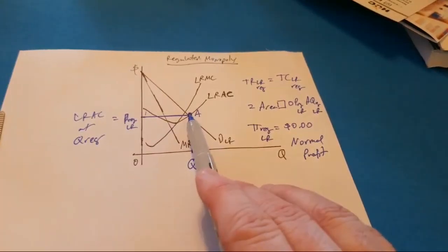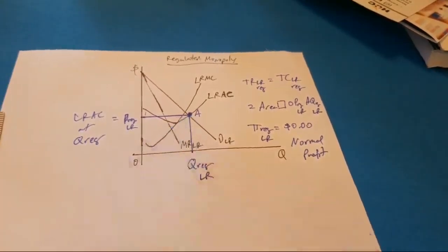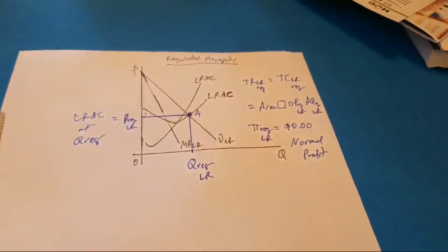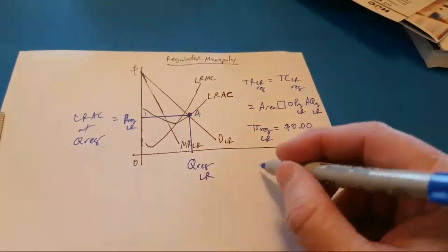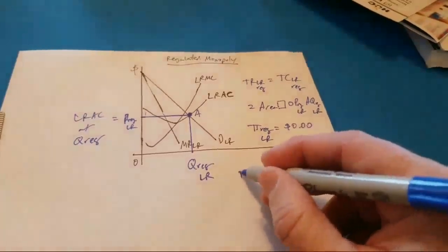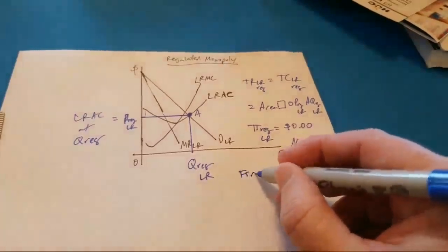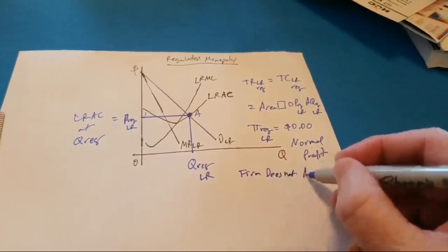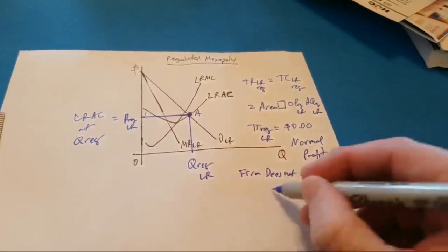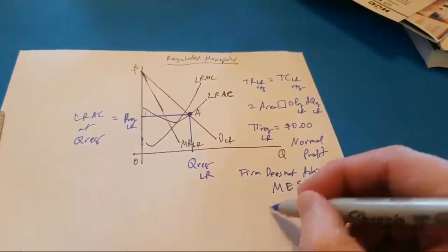Does this firm achieve minimum efficient scale? Looking at the graph, here's the minimum LRAC — Q reg LR is past minimum LRAC, and that vertical for corner A is well to the right of the minimum point. The business is larger than it needs to be because of the extra lawyers and financial analysts. This regulated monopoly is experiencing diseconomies of scale and is too big. This firm does not achieve minimum efficient scale.